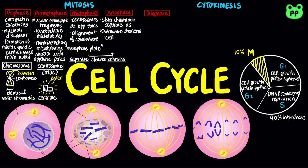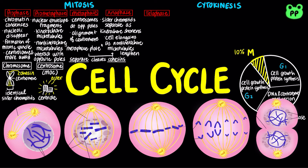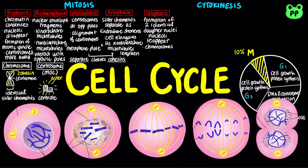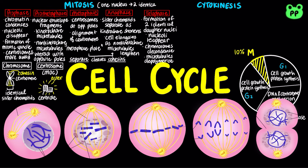The cell also begins to elongate as the non-kinetochore microtubules lengthen. During telophase, two daughter nuclei form in the cell. Nucleoli reappear, chromosomes decondense, and microtubules depolymerize into tubulin subunits. Overall, mitosis divides one nucleus into two genetically identical nuclei.